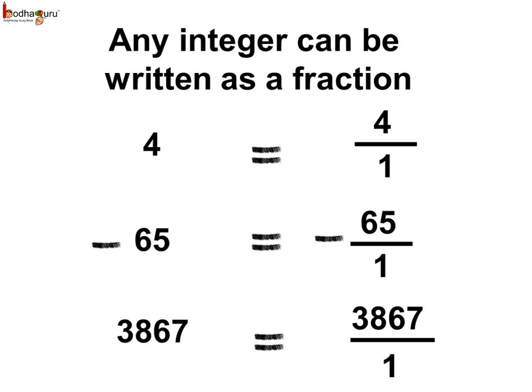You know every integer is a rational number because any integer can be written as a fraction. For example, 4 can be written as 4 by 1, minus 65 can be written as minus 65 by 1 and 3867 can be written as 3867 by 1.